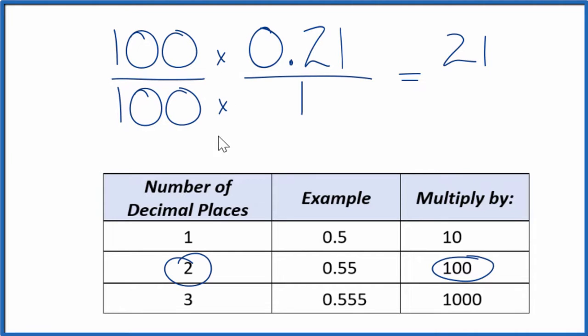100 over 100, that's just 1. So again, we're not changing the value, just the form it's written in. 100 times 1, that is 100.